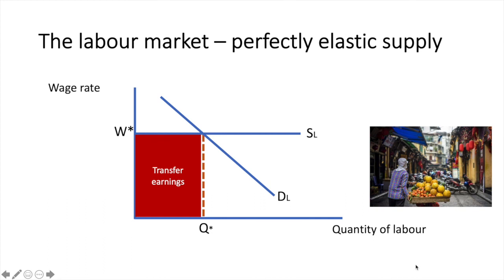In the case of perfectly elastic supply, no workers are willing to supply their labour for below the market wage rate, and thus the earnings are completely transfer earnings. They receive no economic rent because the market does not pay above the minimum they would need to supply their labour.